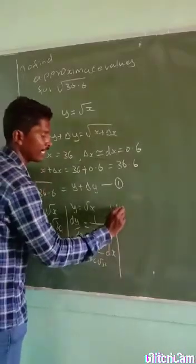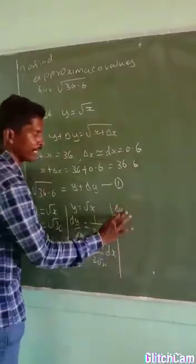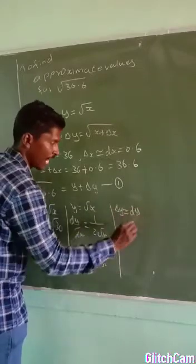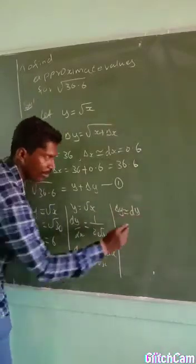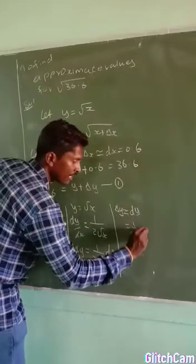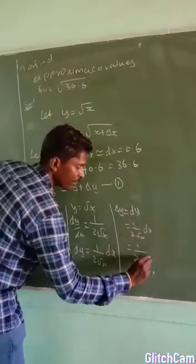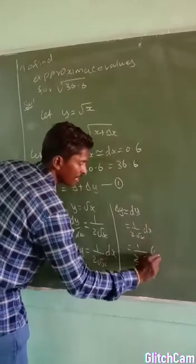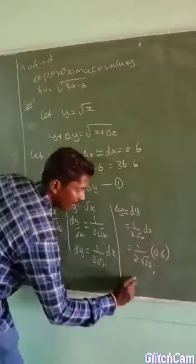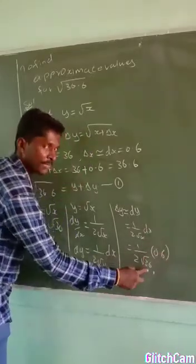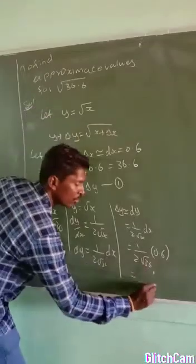What is delta y? Then delta y approximately equals dy. I have dy as 1 by 2 root x into dx. Now substitute the values. Instead of x substitute 36, instead of dx substitute 0.6. Then root 36 becomes 6, 6 into 2 is 12.